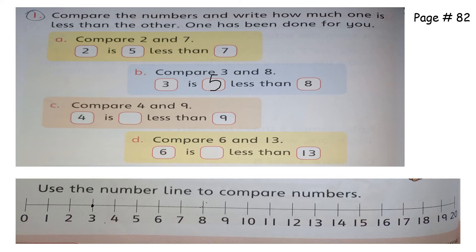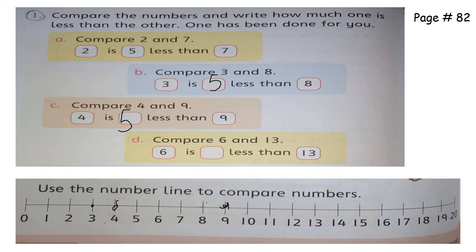Now see how much four is less than nine. Four has to reach nine — how many steps? One, two, three, four, five — four has to move five steps. Now compare six and thirteen: where is six on the number line? Here. Where is thirteen? Here. Six has to move: one, two, three, four, five, six, seven — so six is seven less than thirteen. Now you have to do the rest parts by yourself.